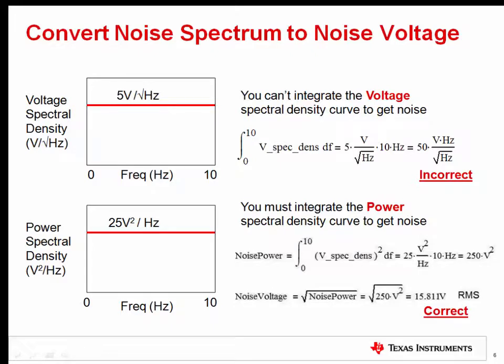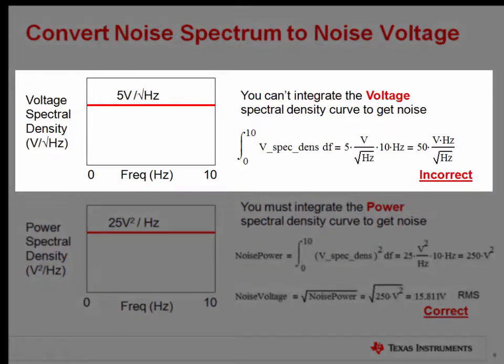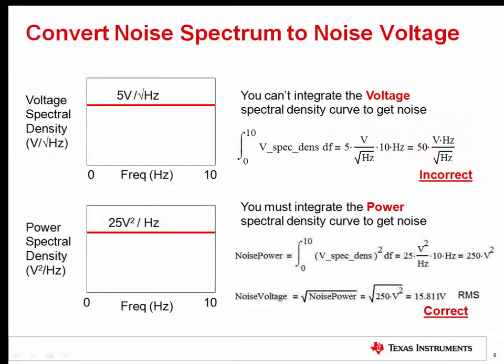In this slide, we will reiterate the method for converting from voltage spectral density to RMS voltage. A common misunderstanding with noise analysis is that total noise can be computed by integrating the voltage or current spectral density, when in fact you must integrate the power spectral density. The example at the top of the slide shows what happens when integrating voltage spectral density. Remember from the previous slide that the integral of a rectangle is the width times the height. So in this case, the result is 5 volts divided by square root hertz times 10 hertz. Notice that the units for this example are very unusual, volts times hertz divided by square root hertz. In fact, the units should just be volts. The point is that through dimensional analysis, you can see that integrating voltage spectral density directly is not the correct way to convert spectral density to RMS.